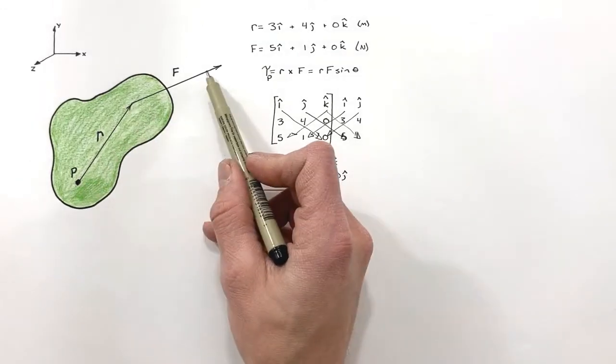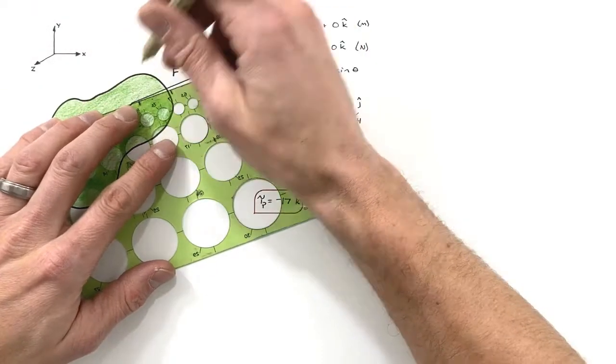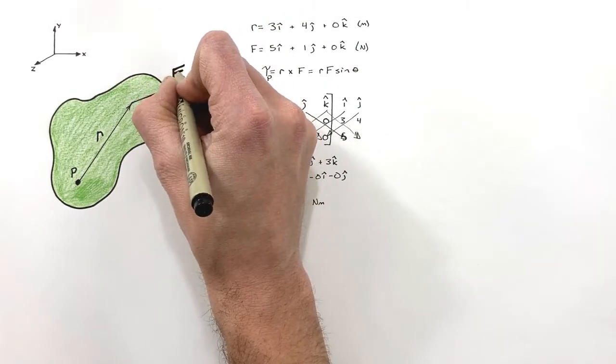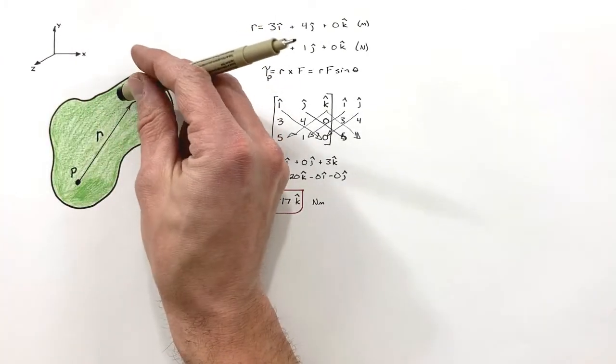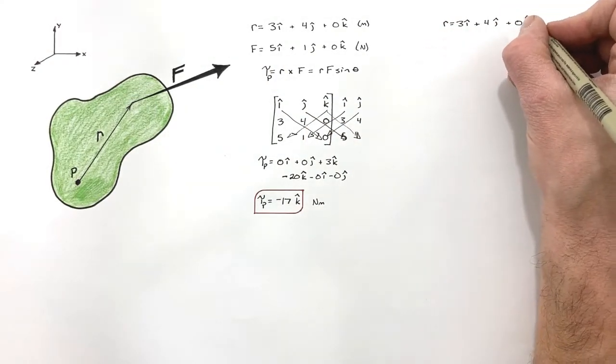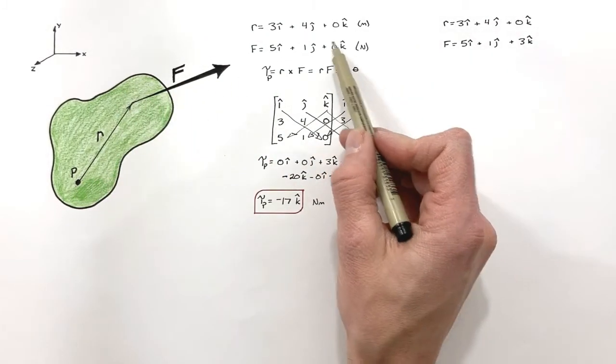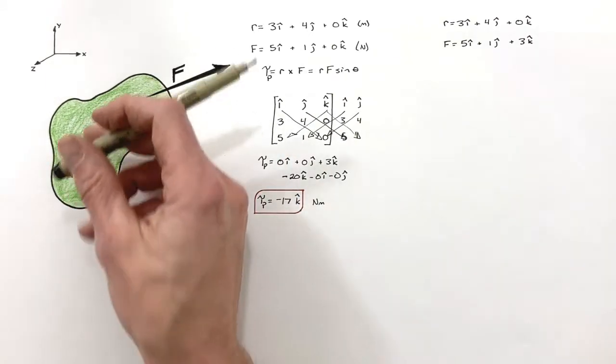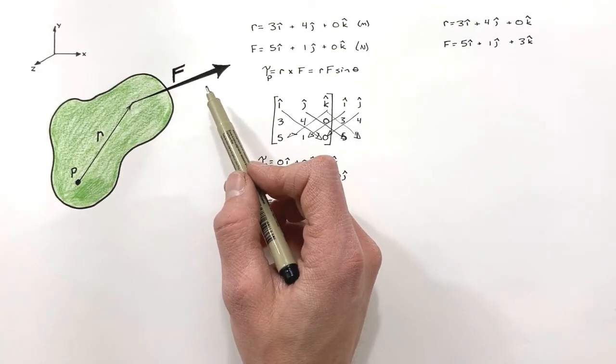So instead of having both the radius and the force lie in the plane of the page, let's have the force come out of the page some. All right, so now rather than having the force just lie in the plane of the page, we've got the force directed out of the page some. So it now has the component in the k direction. So now rather than having the force just in the plane of the page with zero component in the k direction, what we've done is we've added a component of this force that is coming out of the page. So it's like this vector is actually coming towards you. And I drew it kind of fancy. I like that. That's a good arrow. I'm going to be honest with you.